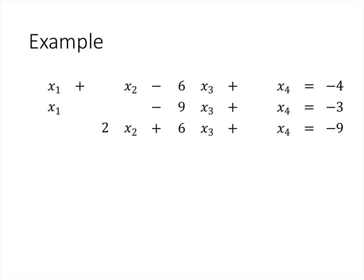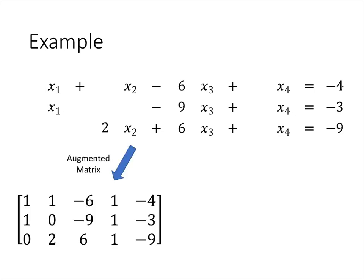Let's do an example and consider this system of equations. The first thing we'll want to do is construct the augmented matrix. Remember that whenever we don't see a coefficient we can think of that coefficient as just being 1, and when a variable is missing we can think of that coefficient as being 0. So if you're wondering where some of these extra numbers are coming from, that's just filling in these gaps.